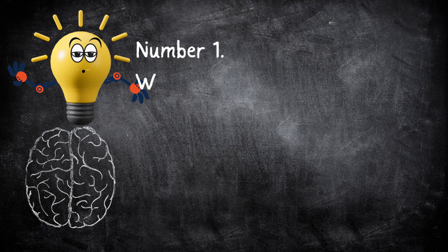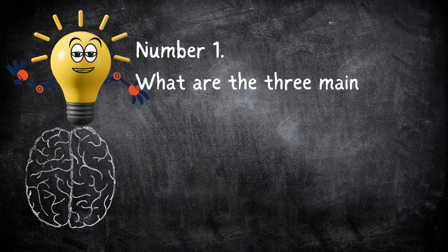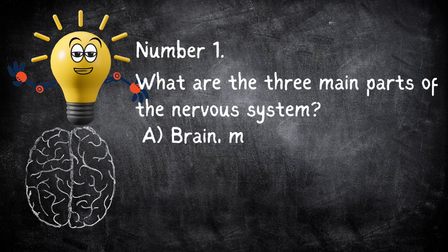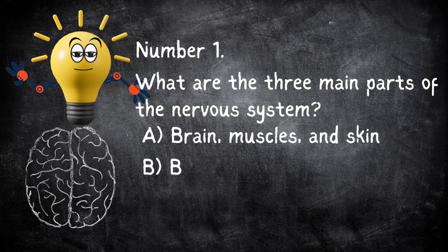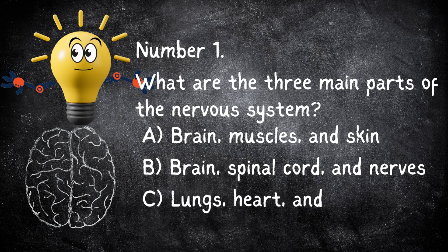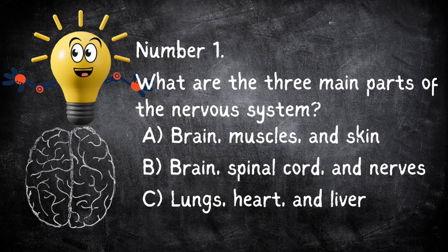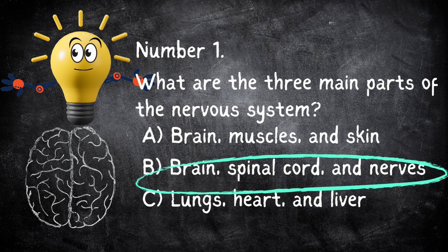Number one, what are the three main parts of the nervous system? A: brain, muscles, and skin. B: brain, spinal cord, and nerves. C: lungs, heart, and liver. If you answered B, you are correct. Excellent!